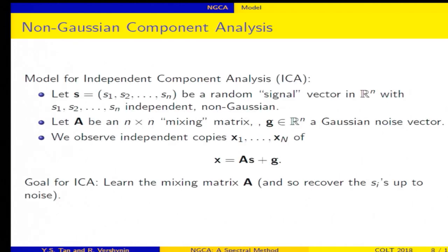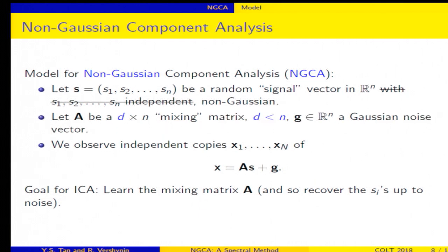Alright, so that was for ICA. So let's move on to NGCA. So I'm going to recall the model for ICA, and let's see how it changes when we move on to non-Gaussian component analysis. Okay, so first our signal vector S. Okay, so we drop this assumption that the components are independent, though we still want to have the entire vector be non-Gaussian. And then our matrix A is no longer N by N, it is now D by N. Okay, so A is no longer really a mixing matrix, it is an embedding matrix. It embeds S into the vector space RD.